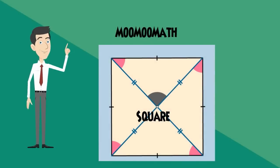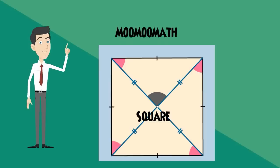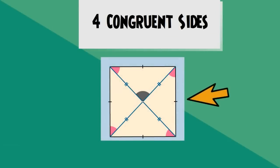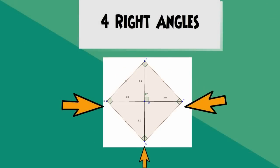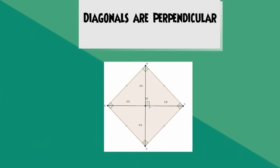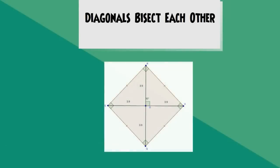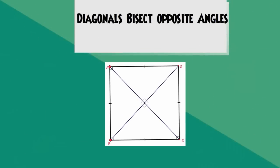In this video I'd like to talk about the properties of a square. A square is a plane shape — it is a quadrilateral that is two-dimensional, so it has length and width but no height. A square has four congruent sides — four equal sides. Along with these four sides you have four right angles. The diagonals of a square are perpendicular and create four right angles, and the diagonals also bisect each other.